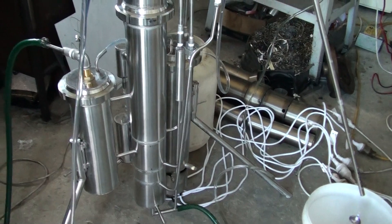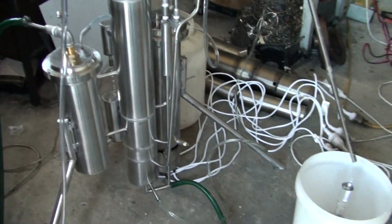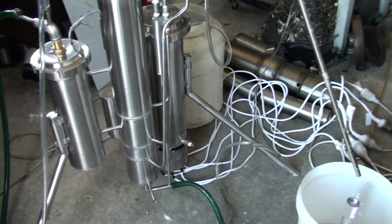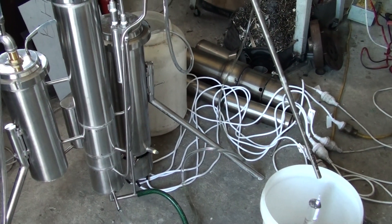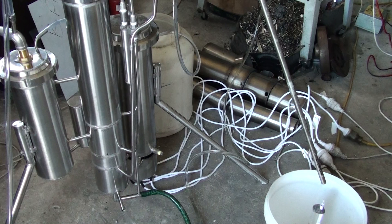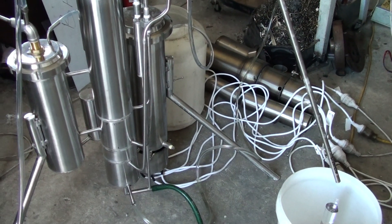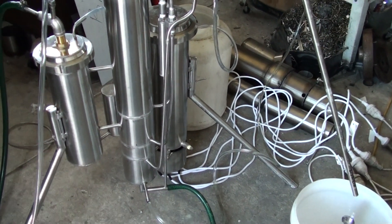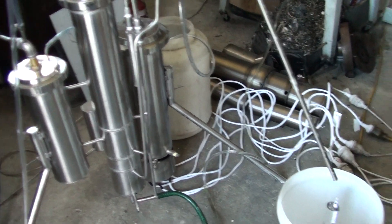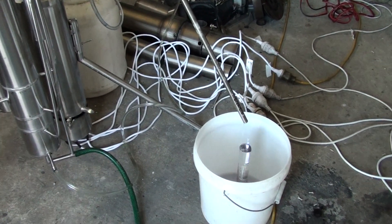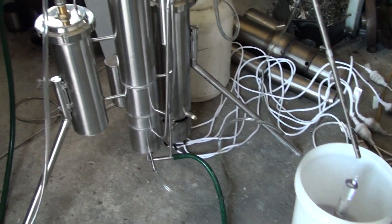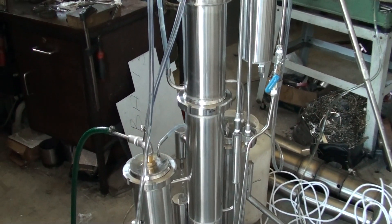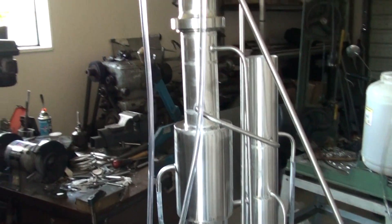Here's the still. Sorry for the lighting, there are a lot of wires. The still can be used at half power and would produce about 50% of its capacity. Right now we're running it at about 10 kilowatts, 240 volts. It's a single column still, everything in one column.